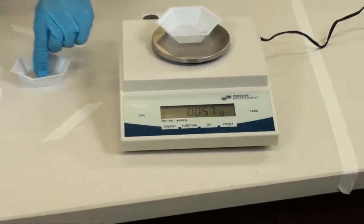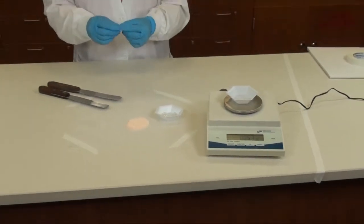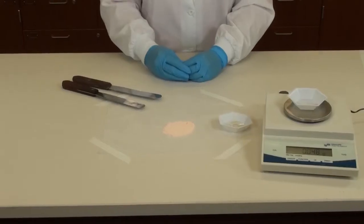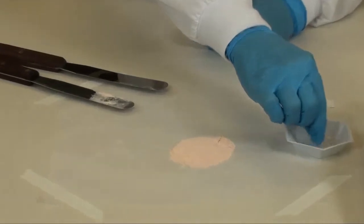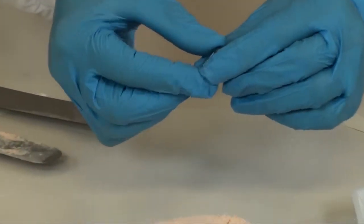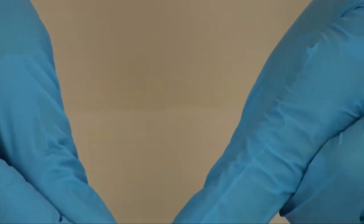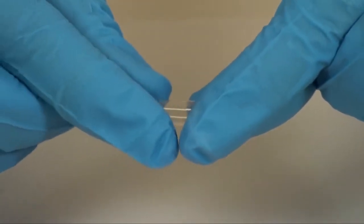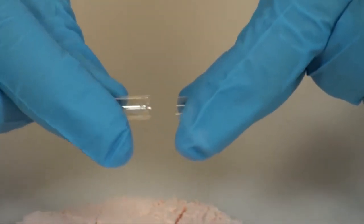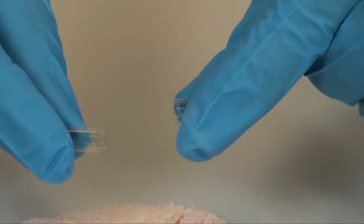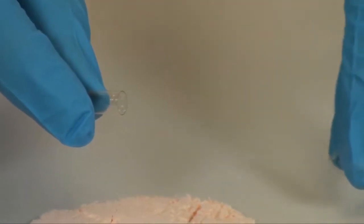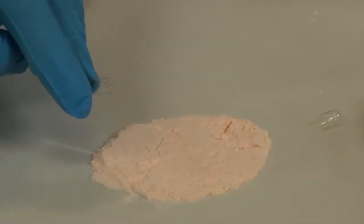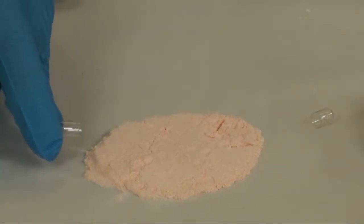You are now ready to punch a capsule. Get an empty capsule and remove the body from the cap. The body is the longer portion and the cap is the shorter. Place the cap on your ointment paper and use the body to fill the powder.